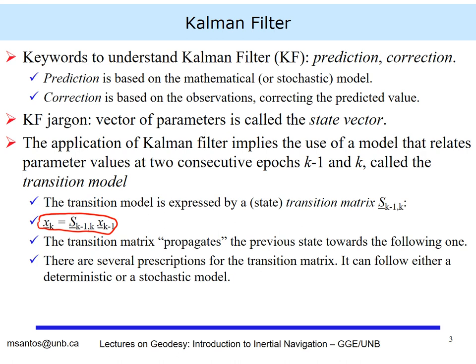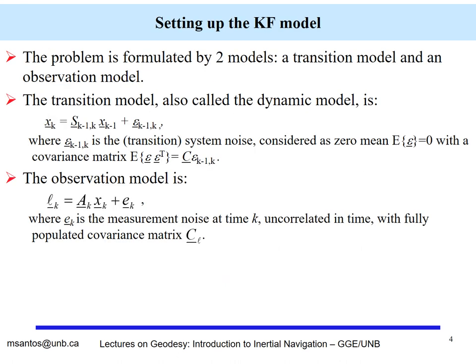The transition matrix propagates the previous state towards the following one, and there are several prescriptions for it — it can be either deterministic or stochastic. The problem is formulated by two models: the transition model and the observation model. The transition model, also called the dynamic model, relates two consecutive epochs via the transition matrix, with an additional term called transition noise or system noise, embedded in the covariance matrix of the system noise. The observation model is the parametric model with measurement noise representing the uncertainty of observations, captured in the covariance matrix of the observations.